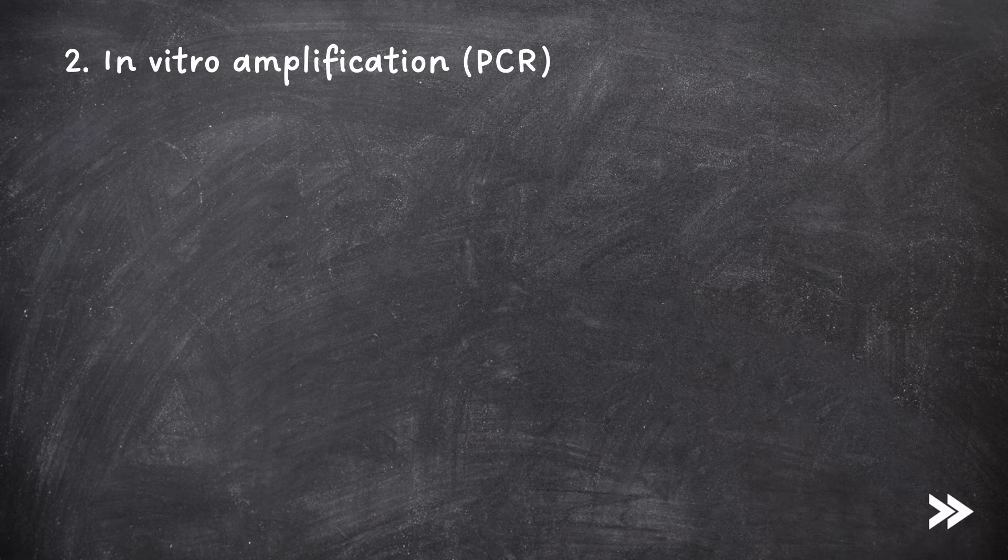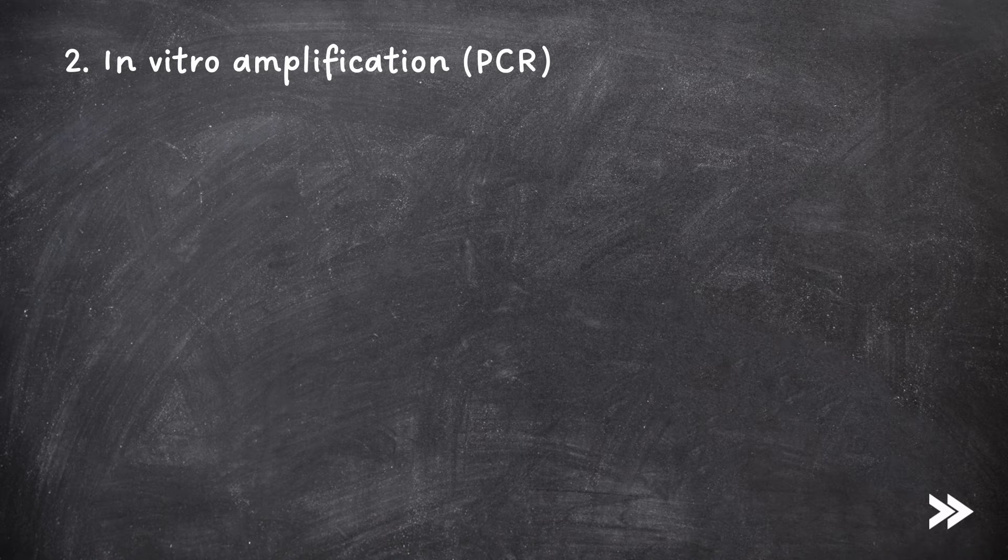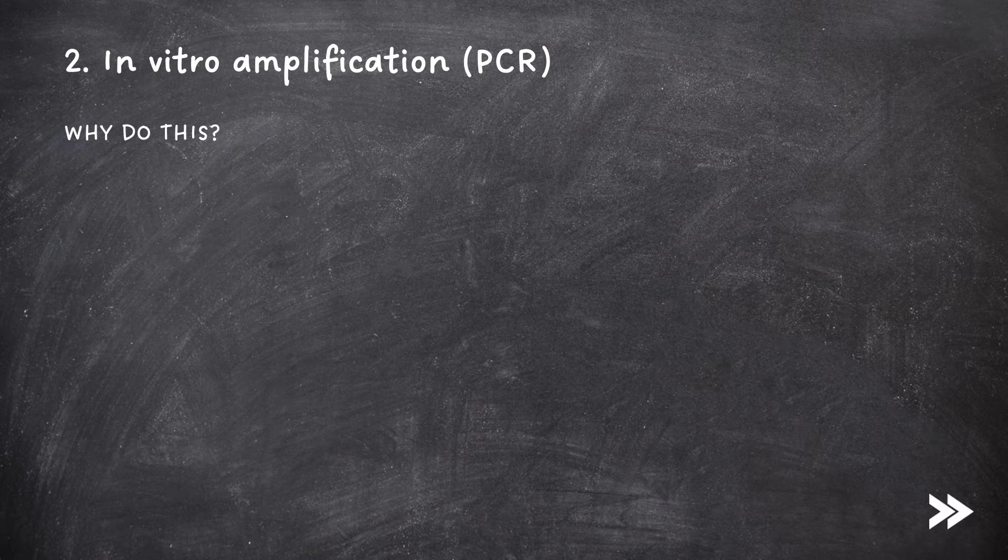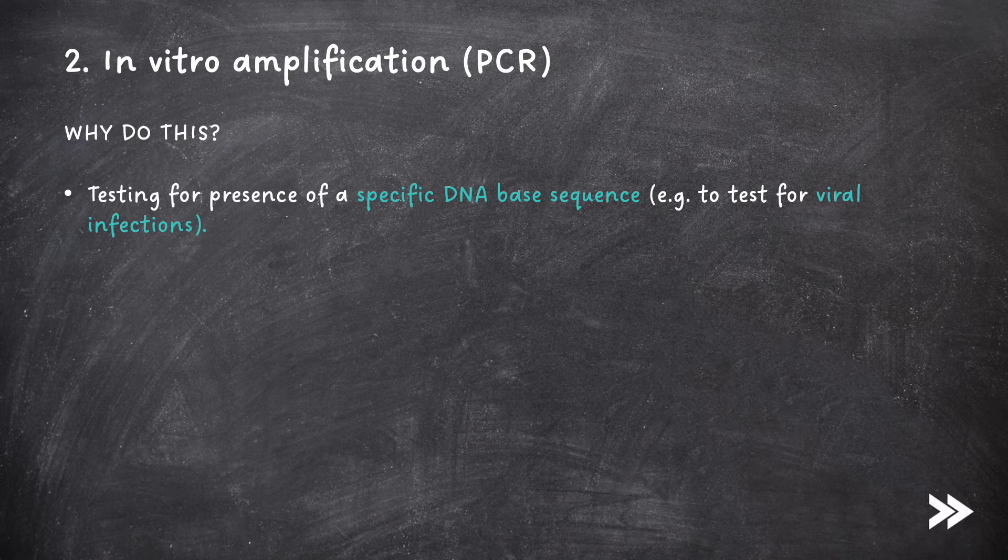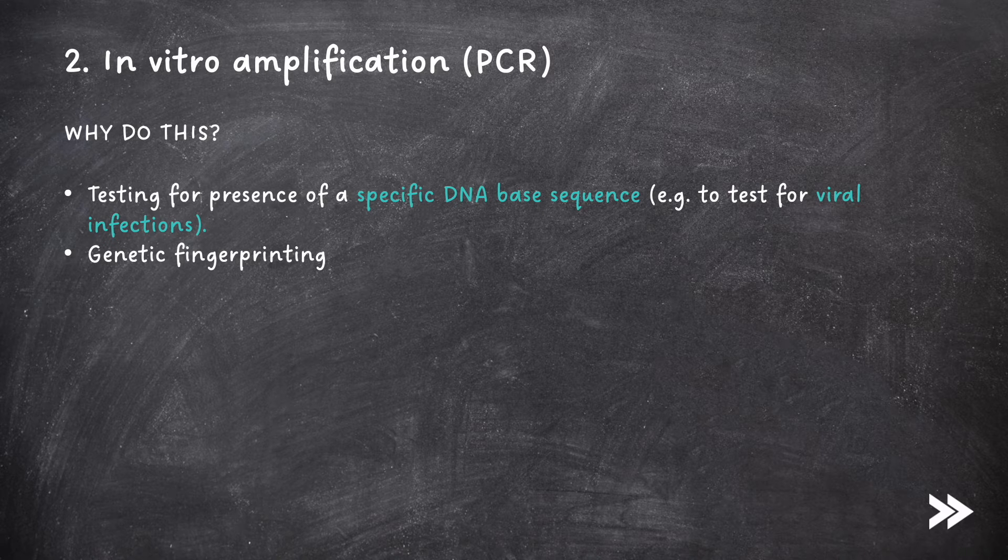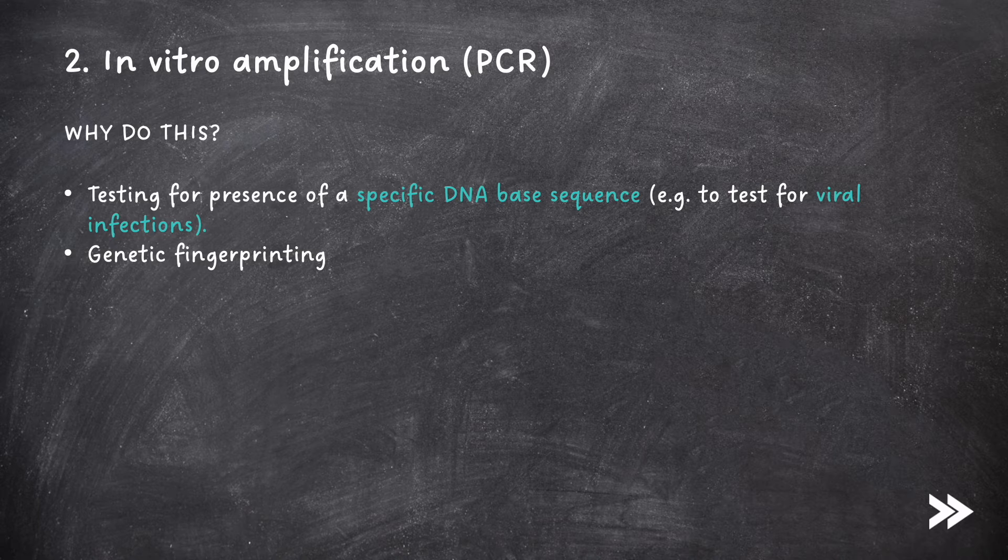Finally, we have in vitro amplification, for which we use the polymerase chain reaction, PCR, method. Why would we use PCR? Well, we could use it to test for the presence of a specific DNA base sequence, for example, to test for viral infections. We could use it for genetic fingerprinting, which we'll cover later on in the specification. Or we could use it for genetic modification, to transform organisms.